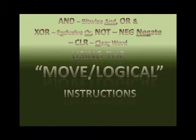The Bitwise And is going to compare two 16-bit words at identical positions, 0 through 15. If they're identical, it puts a 1 in that same position in the destination. So if you're comparing two words and bit 3 of both words are 1, then bit 3 of the destination is going to be 1. If either one is 0 or both are 0, then the destination is 0.